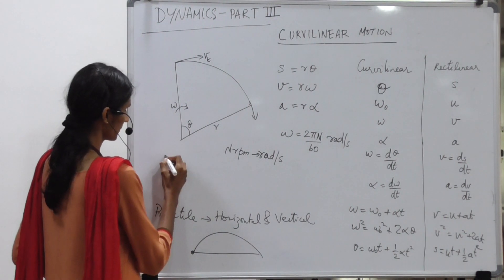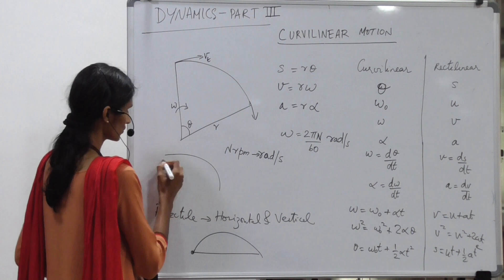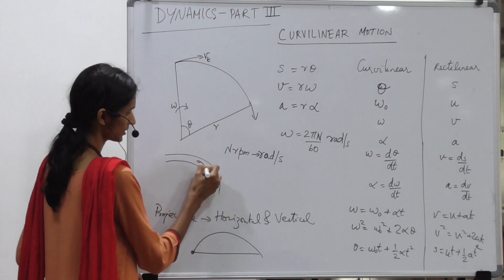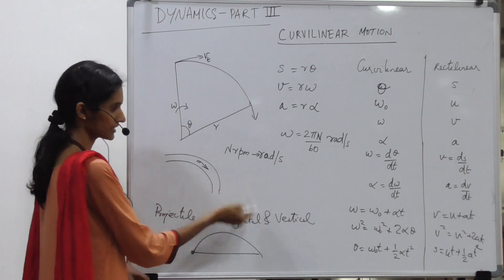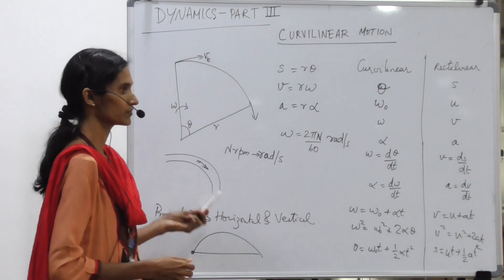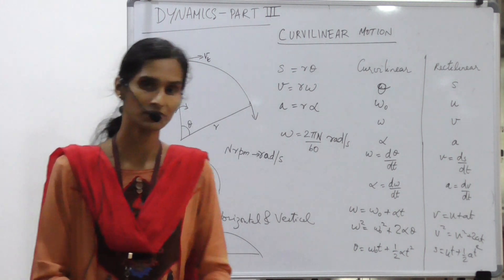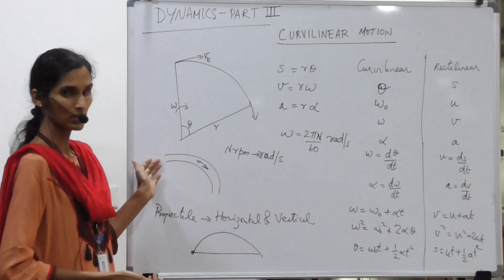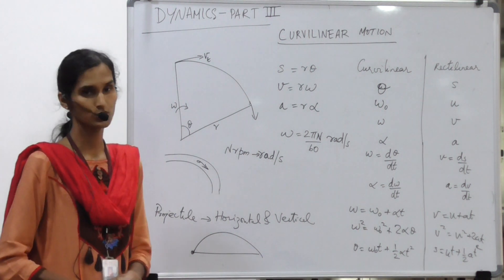While a car passing through a curve or a cyclist passing through a curve undergoes just the horizontal motion. So there are two types of problems we will be dealing with in this curvilinear translation: the horizontal alone and the horizontal and vertical together.